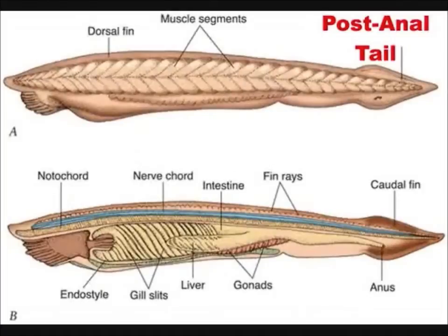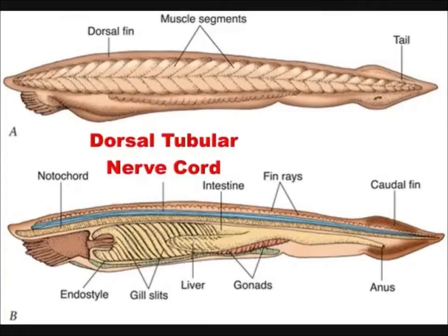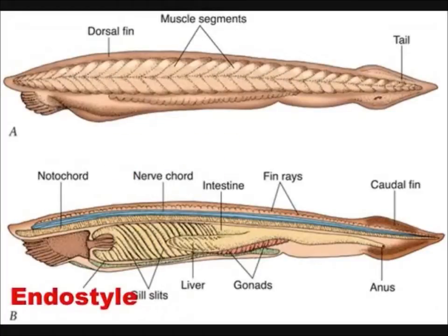Coada: expansiunea corpului situată posterior față de orificiul anal. Sistemul circulator este, în general, închis și cuprinde o inimă, vase de sânge și sânge în care hemoglobina din globulele roșii este răspunzătoare de transportul oxigenului.